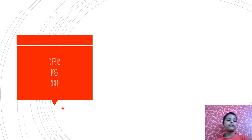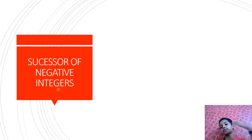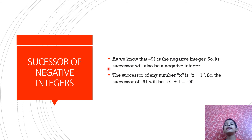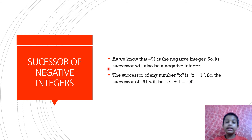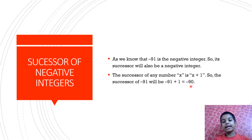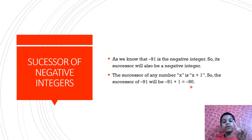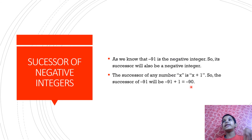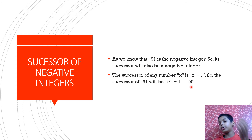Successor of negative integers. Let's apply it to negative integers. Minus 91 is a negative integer. The successor of any number would be plus 1, so minus 91 plus 1 equals minus 90. If there are two different signs, we need to subtract: minus 91 and plus 1 have different signs, so 91 minus 1 equals 90. We put the sign of the greater number — 91 is greater, so we put minus.